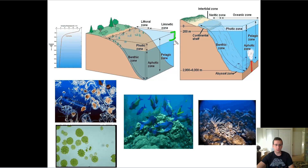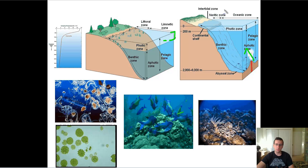We call that the photic zone. But underneath that, you're going to have the aphotic zone, and that's where there's no sunlight, so there's no algae there — no production by algae anyway. There might be some chemosynthetic organisms producing something there, and there's going to be some decomposers at the bottom. But the majority of aquatic production is happening in the photic zone.